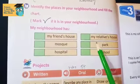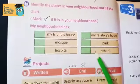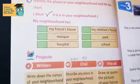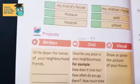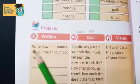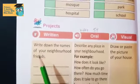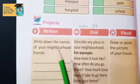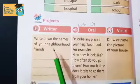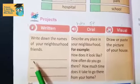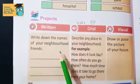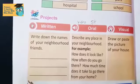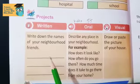Now moving on to the last question, which is the projects. Part A: write down the names of your neighborhood friends. What you have to do is make a list of your friends who live in your neighborhood. You have to write their names.